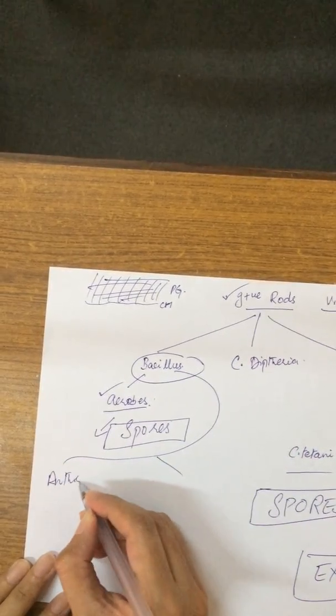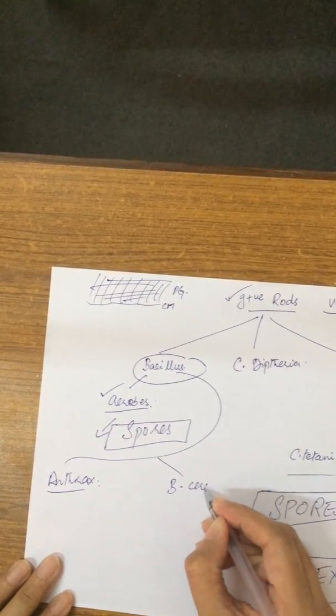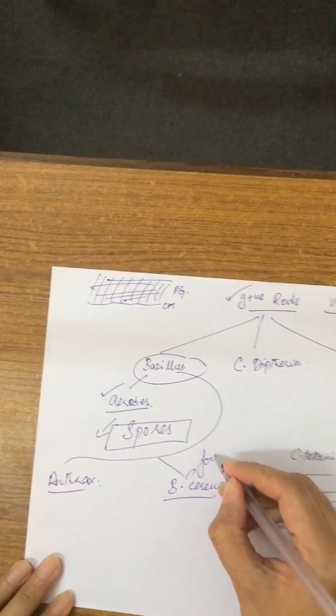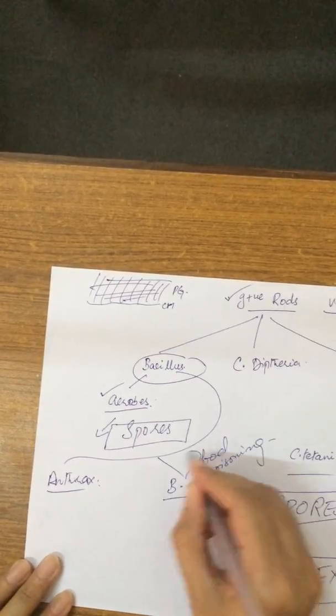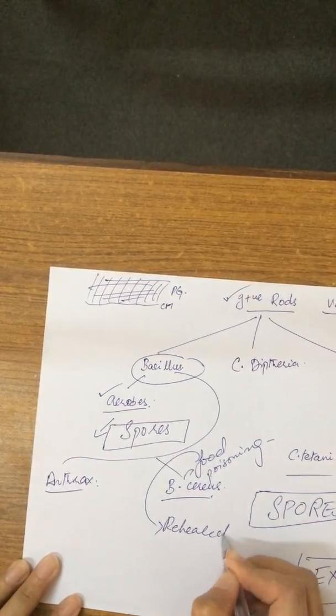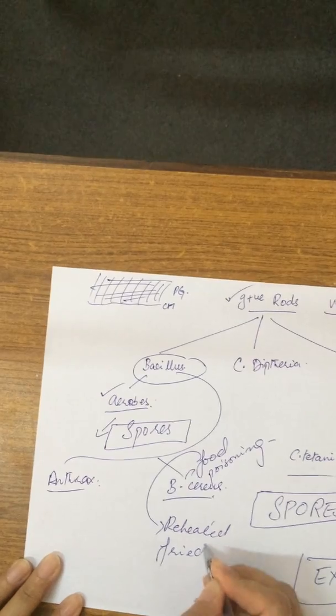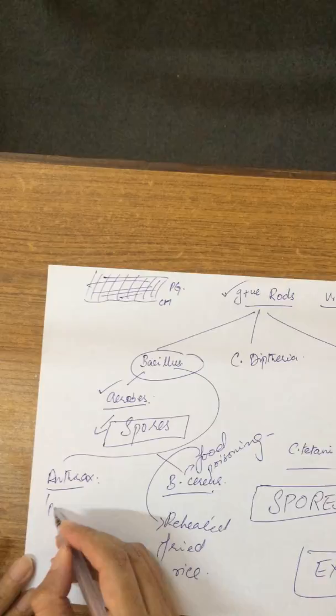One group is Bacillus anthracis causing anthrax. The other is Bacillus cereus which causes food poisoning. This food poisoning is caused by reheated fried rice. Anthrax is of three types.